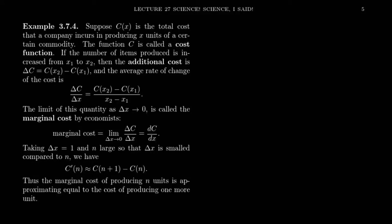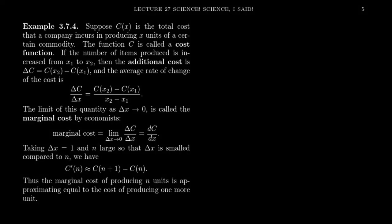Continuing with our discussion of applications of the derivative, in this video I want to focus on how the derivative is useful in the field of business, particularly in the discipline of economics. Let's talk about things like cost, revenue, and profit and what that has to do with derivatives. So with the first example, let's suppose that C of x is the total cost a company incurs in producing x units of a certain commodity. The function C is the so-called cost function — how much money does it cost the company to produce x mini graphing calculators, protractors, or whatever they're making.